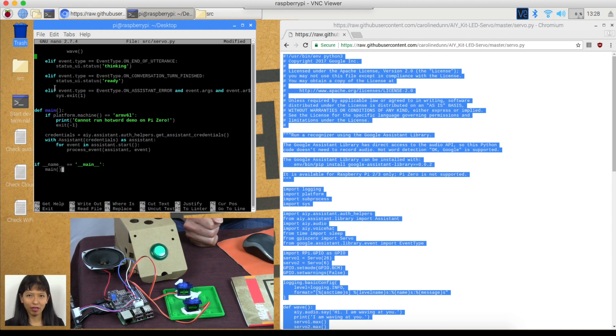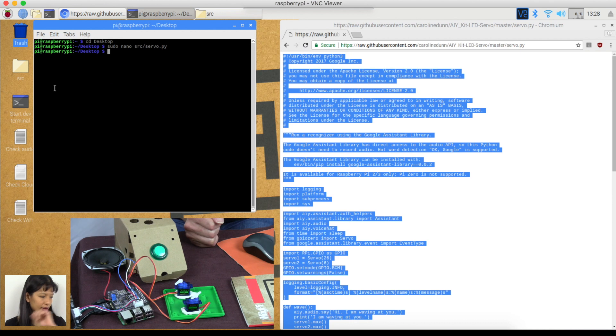And sure enough, it is all there now. Control X and yes to save. Yes, that's my file name. Now, we need to make it executable. So, I will chmod plus x src servo.py.